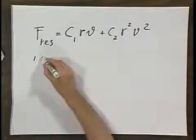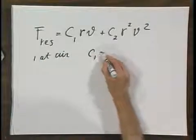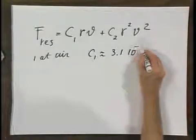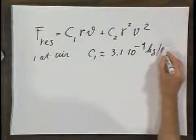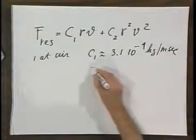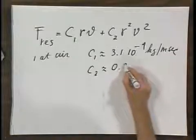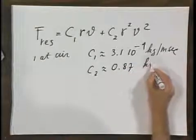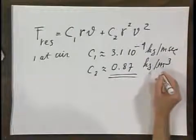If we deal with one atmosphere air, then C₁ is approximately 3.1 × 10⁻⁴ kilograms per meter per second, and C₂ is approximately 0.87 kilograms per cubic meter. This has the dimension of density.